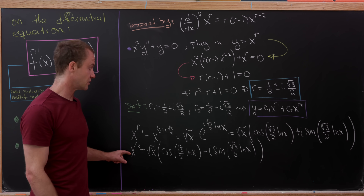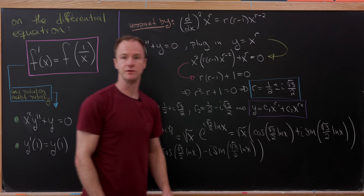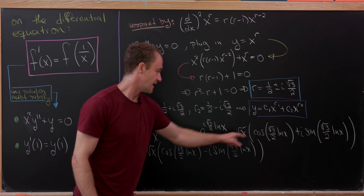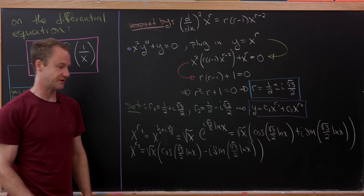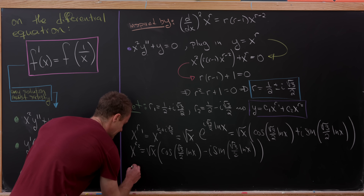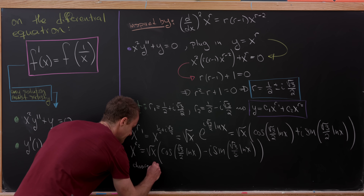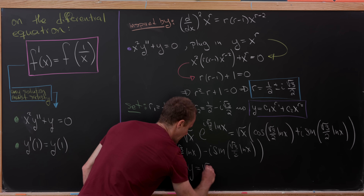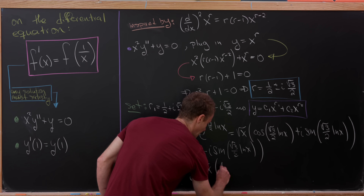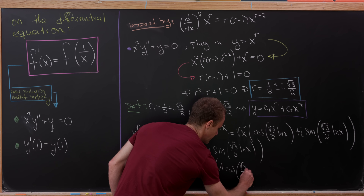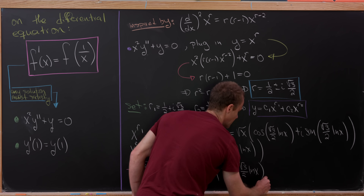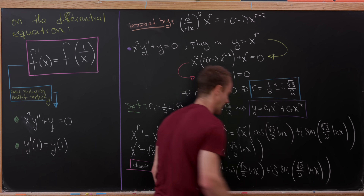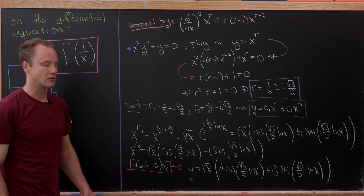It's more typical to choose the arbitrary constants c1 and c2 so that we can combine the cosine terms and sine terms from x to the r1 and x to the r2. Doing so, we write the general solution as y equals the square root of x times the quantity a times cosine of (root 3 over 2 times ln x) plus b times sine of (root 3 over 2 times ln x), which is a nicer general form.